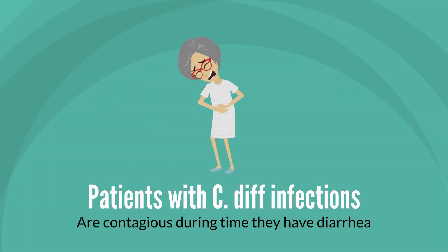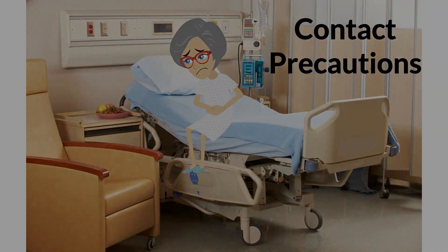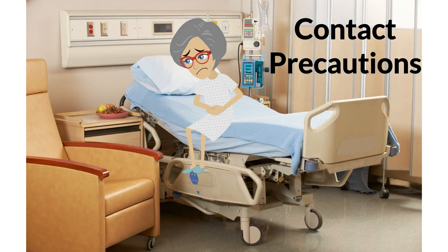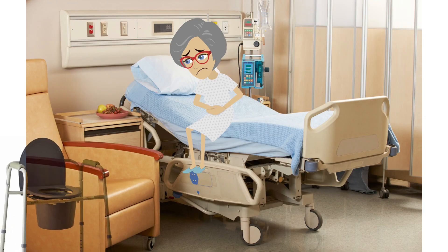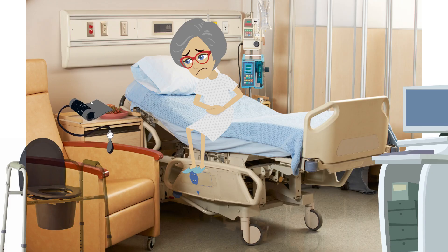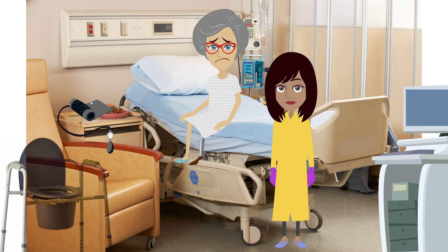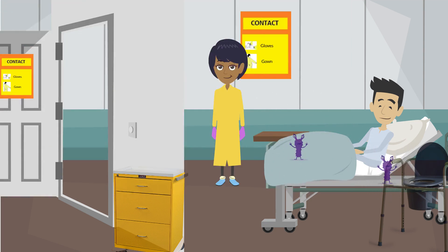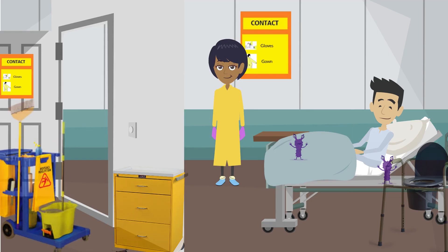Patients with C. diff infections are considered contagious during the time that they have diarrhea. In long-term care facilities, use contact precautions for residents with active C. diff infections. This includes providing separate toilets or a commode chair if a C. diff confirmed resident is sharing a room with a non-infected resident, and dedicating patient care equipment to the C. diff resident. Use gowns and gloves when caring for the C. diff resident or for contact with their environment while in the room.